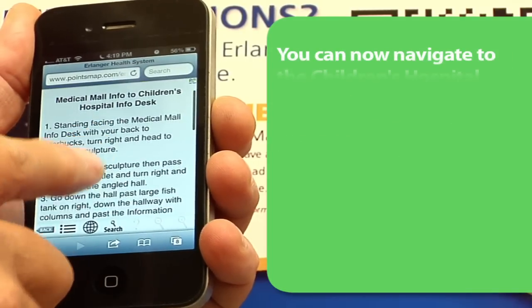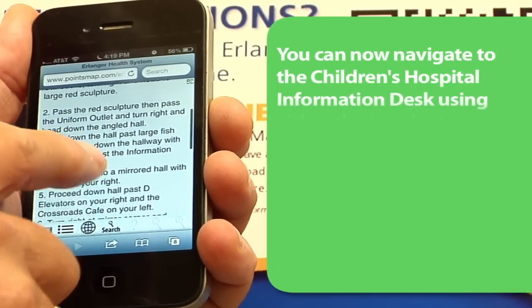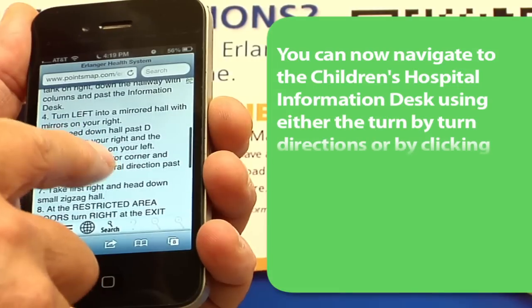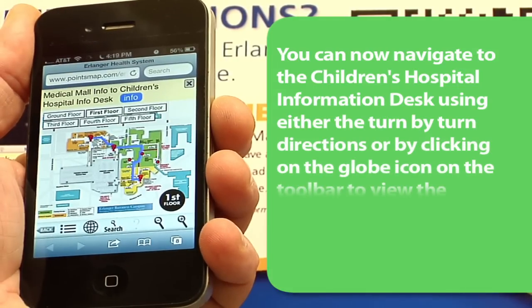You can now navigate to the Children's Hospital Information Desk using either the turn-by-turn directions or by clicking the globe icon on the toolbar to view the PathMap.